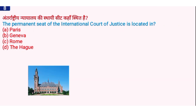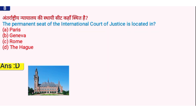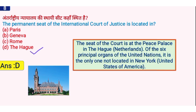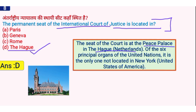The permanent seat of the International Court of Justice is located where? The seat of the court is the Peace Palace in The Hague, Netherlands. Of the six principal organs of the UN, the International Court of Justice is the only one not located in New York, United States of America.